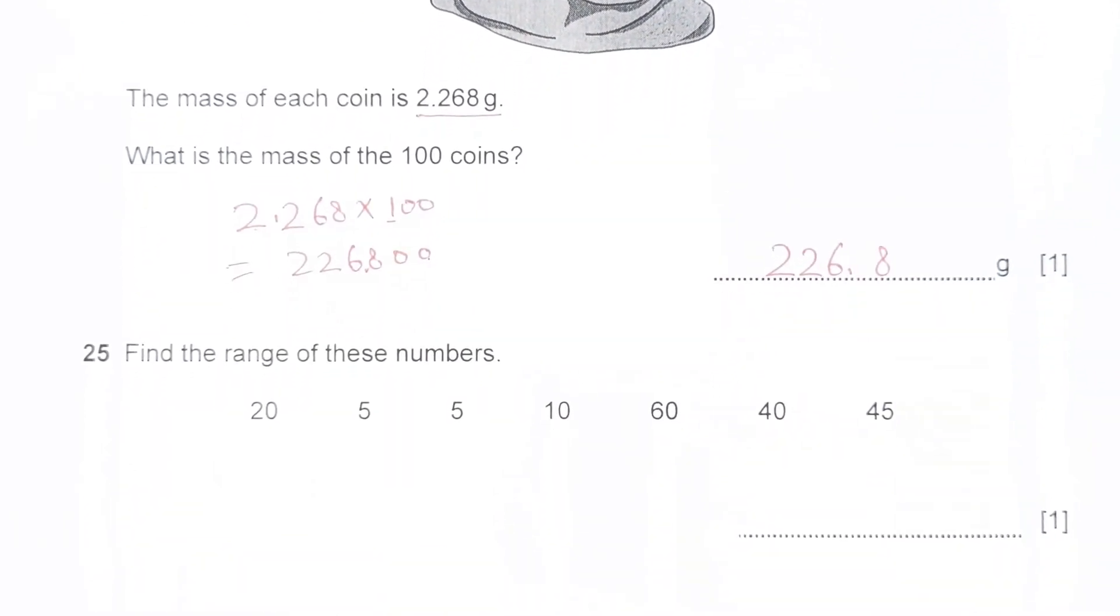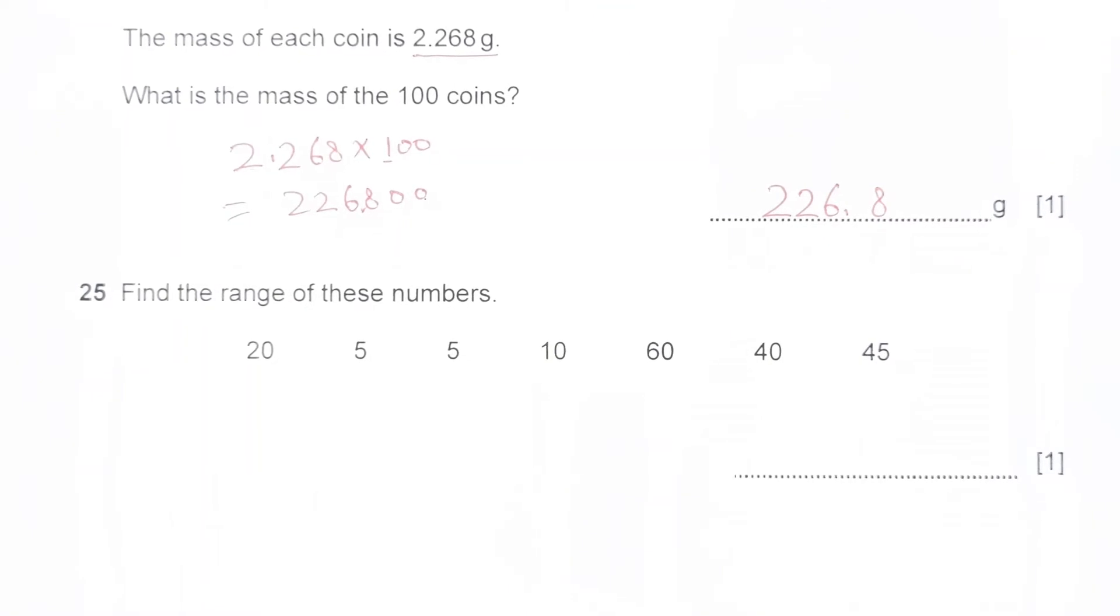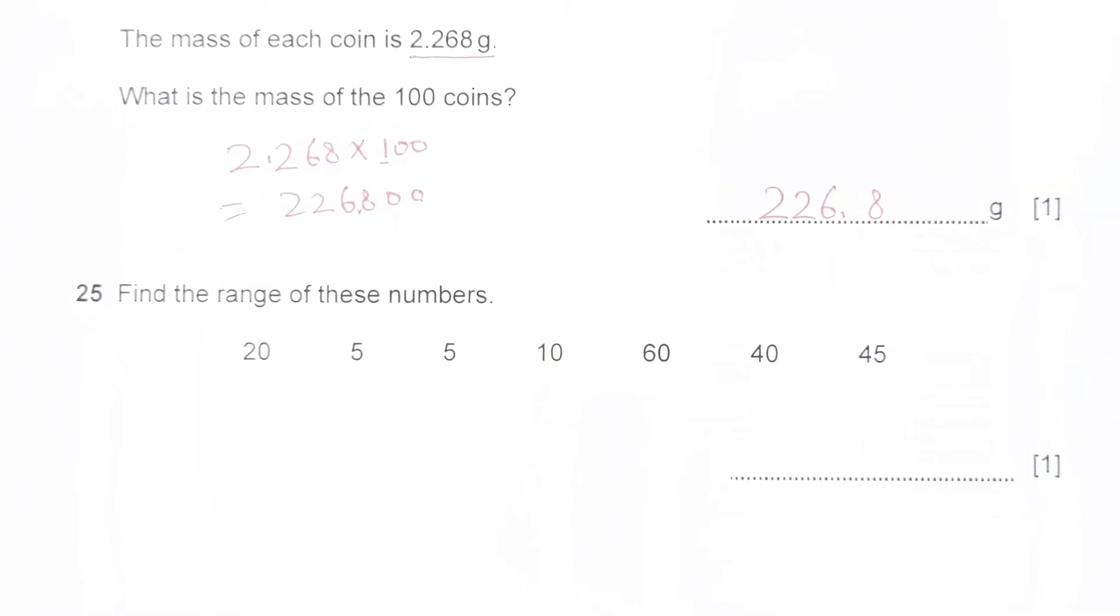Number 25. Find the range of these numbers. What is range? The formula: Range is maximum value minus the minimum. Which one is maximum here? 60. And minimum is 5. 60 minus 5 is 55. Our final answer is 55.